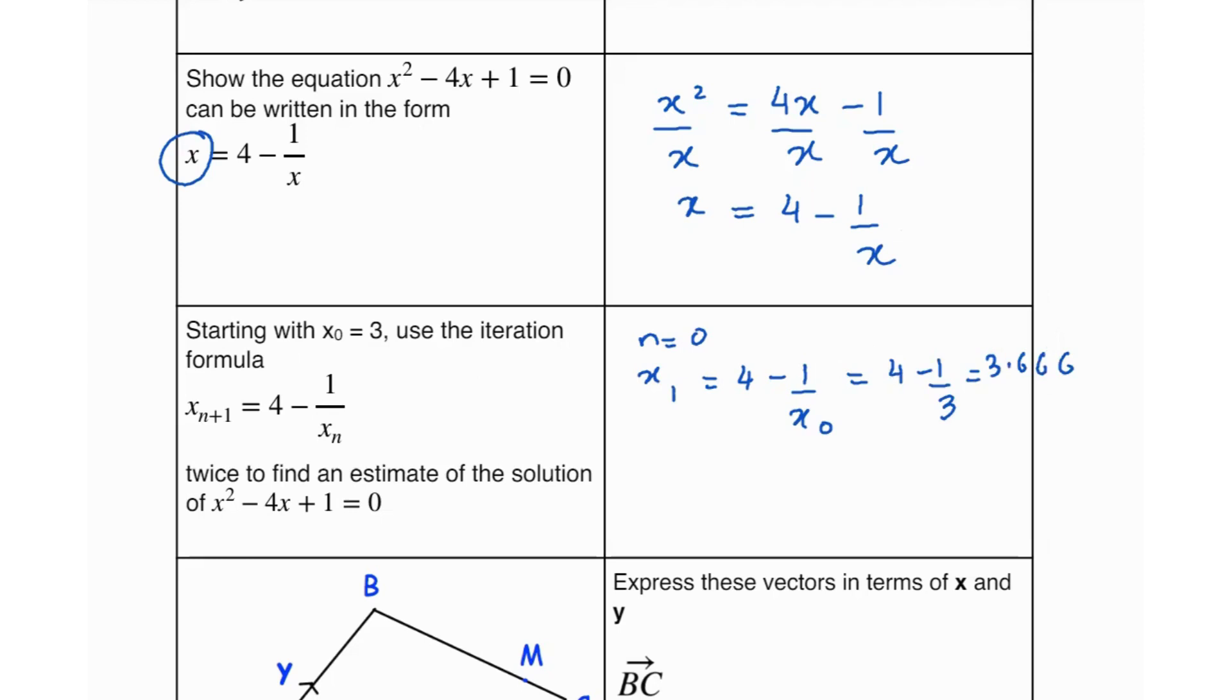And then for x₂ we'll do 4 minus 1 over x₁, that's going to be 4 minus 1 over 3.6 recurring, and that's going to be 3.72. It says to use the iteration formula twice to find an estimate, so we've used it twice. The estimate is going to be 3.72 for the solution.